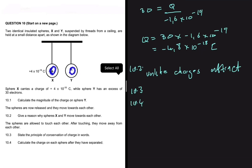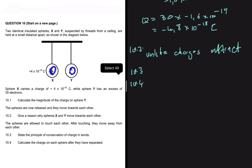And 10.4. 10.4 says that let's calculate the charge on each sphere after they have separated. So the two spheres touch and then they separate. So we need the new charge after they've separated. We have a formula for that. It is Q_new. So the new charge on the spheres will be equal to Q1 plus Q2 divided by 2.